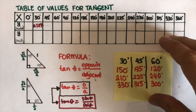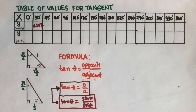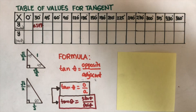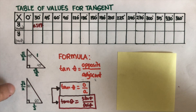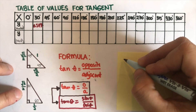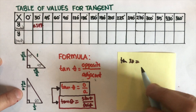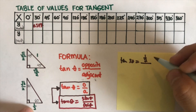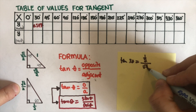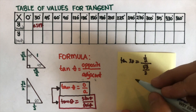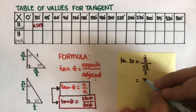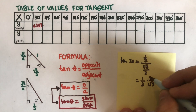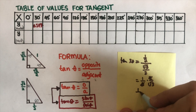Now let's find the exact value for tangent 30. We use the calculator for the rounded. Now for the exact value: tangent 30 equals the opposite of 30, which is one half, over the adjacent of 30, which is square root of three over two. It's a complex fraction, so flip the bottom and multiply across. This gives one over two times two over square root of three, which comes out to one over square root of three.